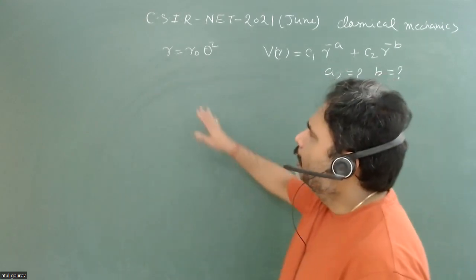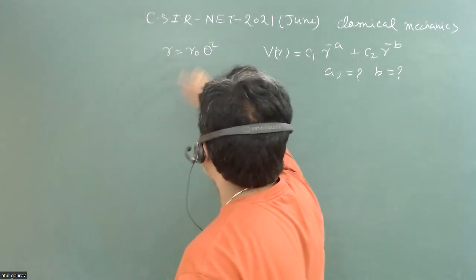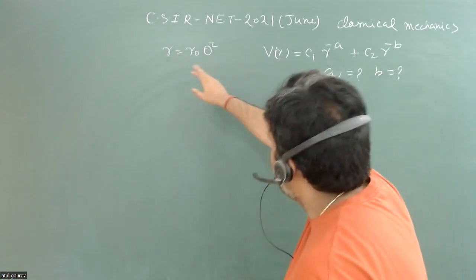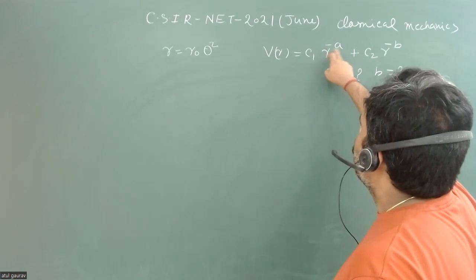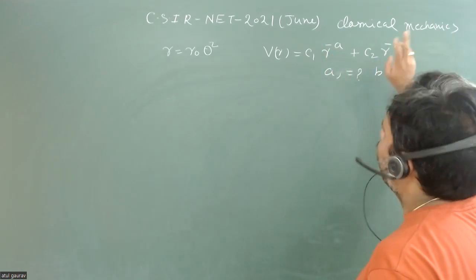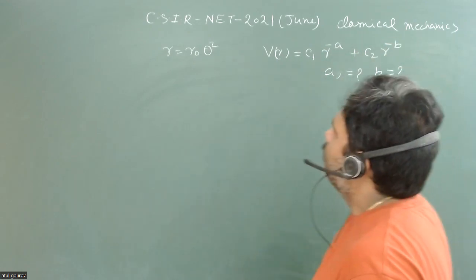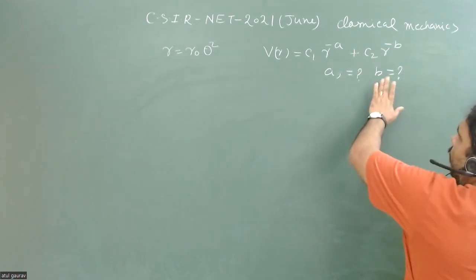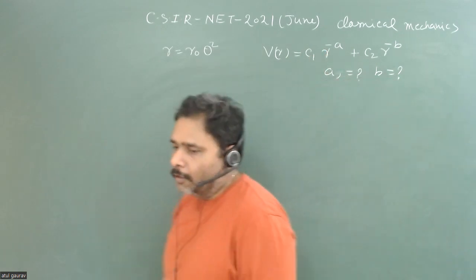So what is given? It is given that the equation of orbit is r equals r naught theta square. And for this particular orbit, the potential is given in this form: c1 r to the power minus a plus c2 r to the power minus b, where r naught c1 c2 a and b are constants. What we have to do: we have to find the suitable value of a and b such that due to this potential, this is your orbit.